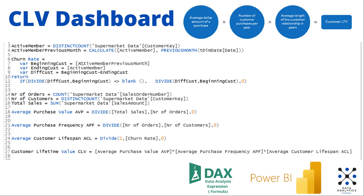The active member is here — a distinct count of the customer key — to count the number of customers. And then the active member previous month is the same number of unique customers, but of the previous month. Then we have some auxiliary measures: number of orders, the count of the sales order number; the number of customers, distinct count of the customer key; and total sales.